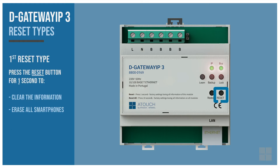Press the reset button for one second to clear the information learned by the learn function. This action also erases all smartphones connected to the gateway. After this action, we will need to learn the installed modules again by pressing the learn button, and also reconnect all the smartphones using the A-Touch app.